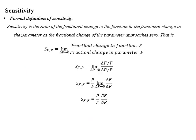Formally, we define sensitivity as the ratio of fractional change in the function to the fractional change in the parameter, as the fractional change of the parameter approaches zero. That is, for a function f and parameter p, the sensitivity of f with respect to p equals the limit as Δp→0 of (fractional change in f) / (fractional change in p). Solving and applying the limit, we get: S = (p/f) · (∂f/∂p).